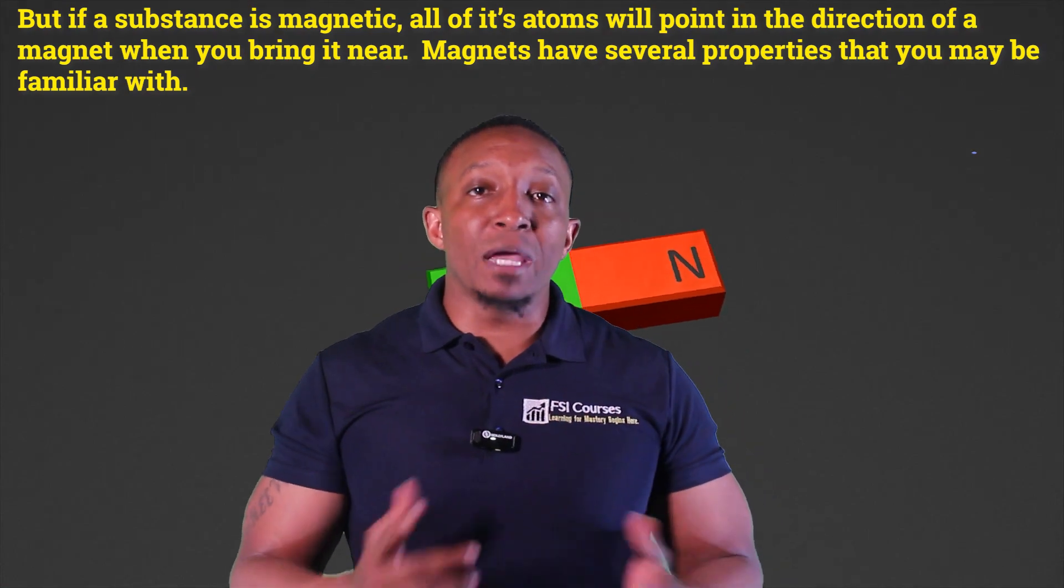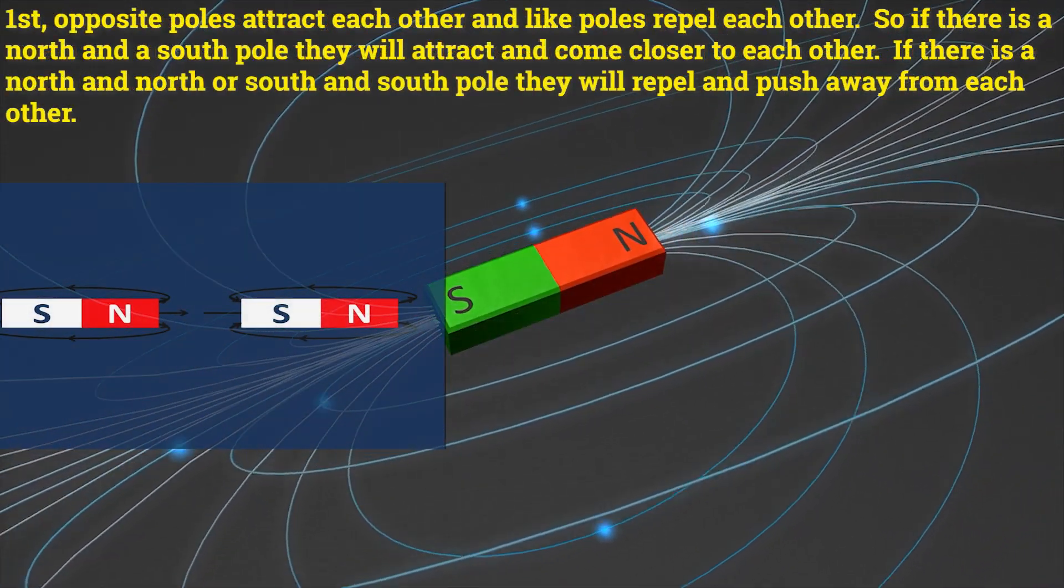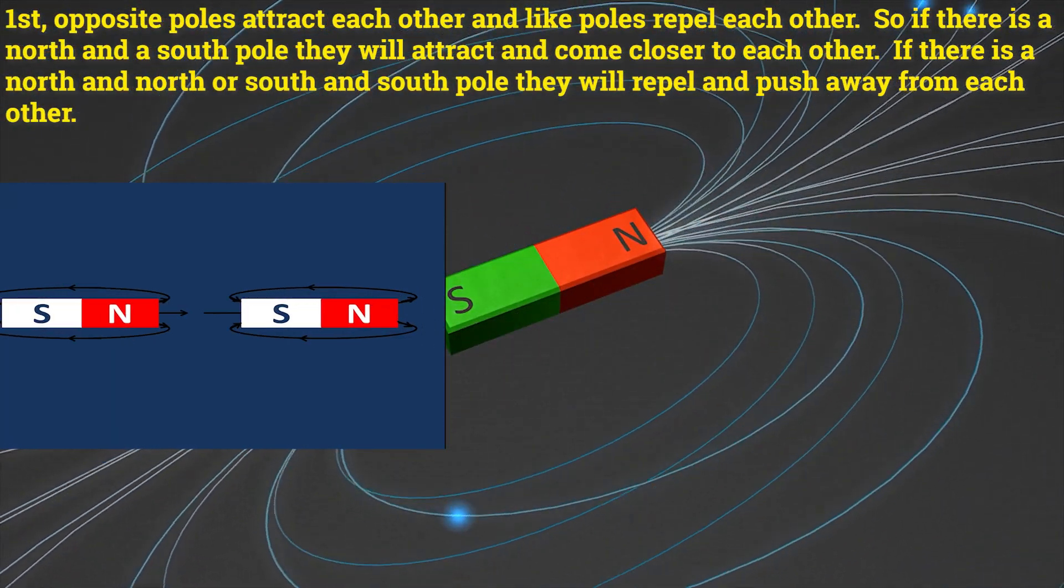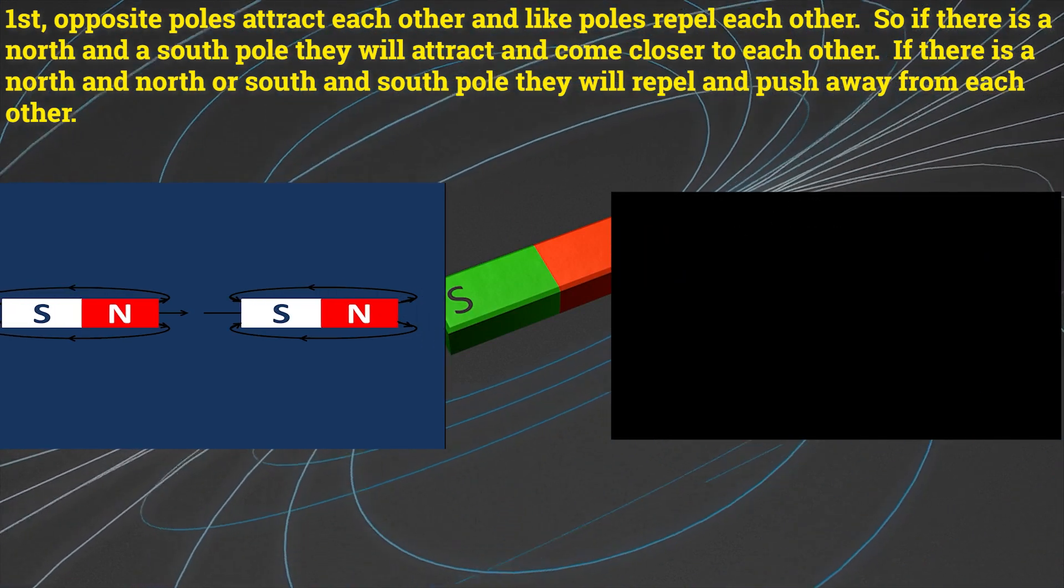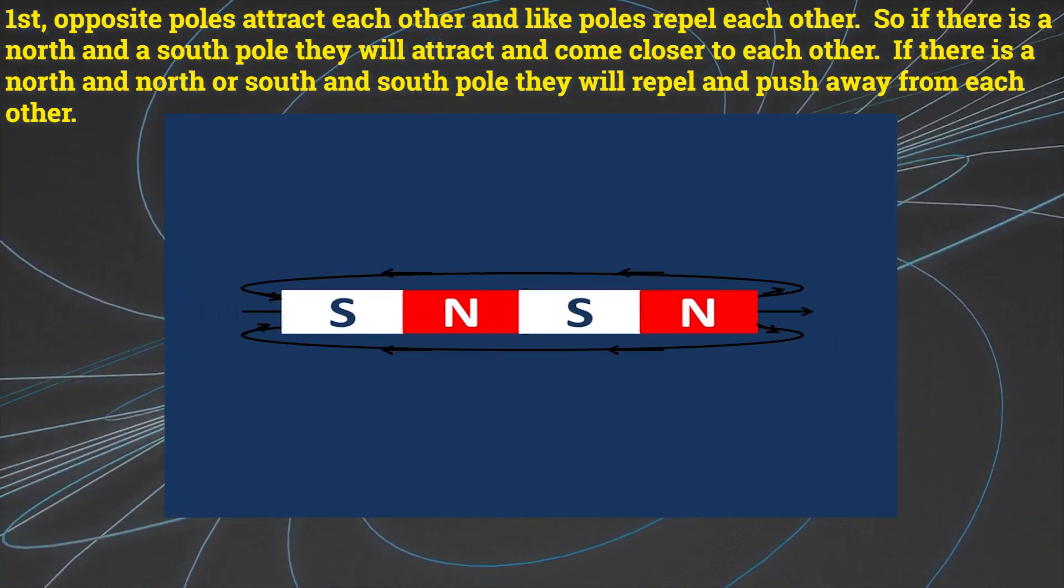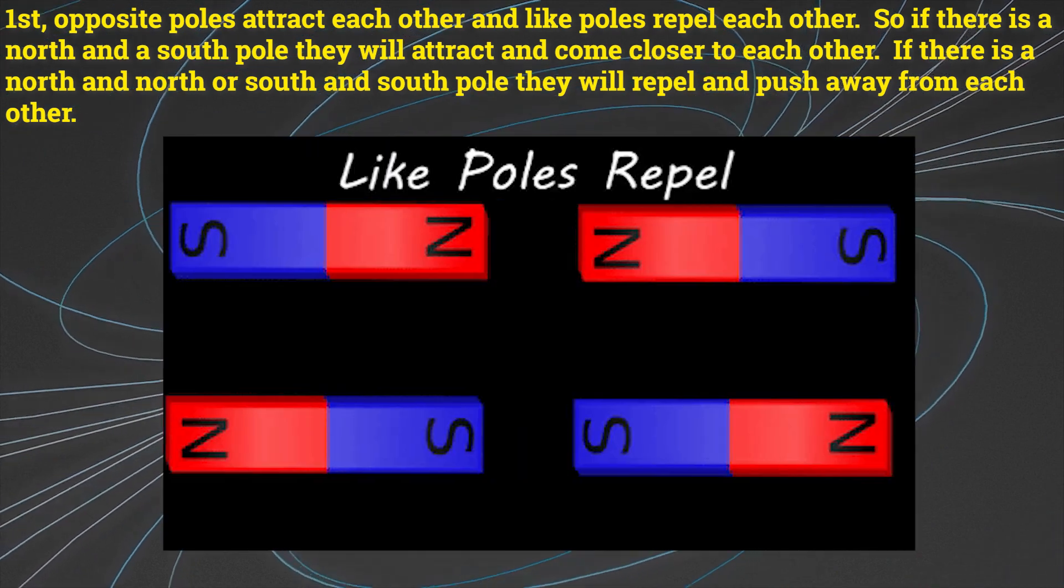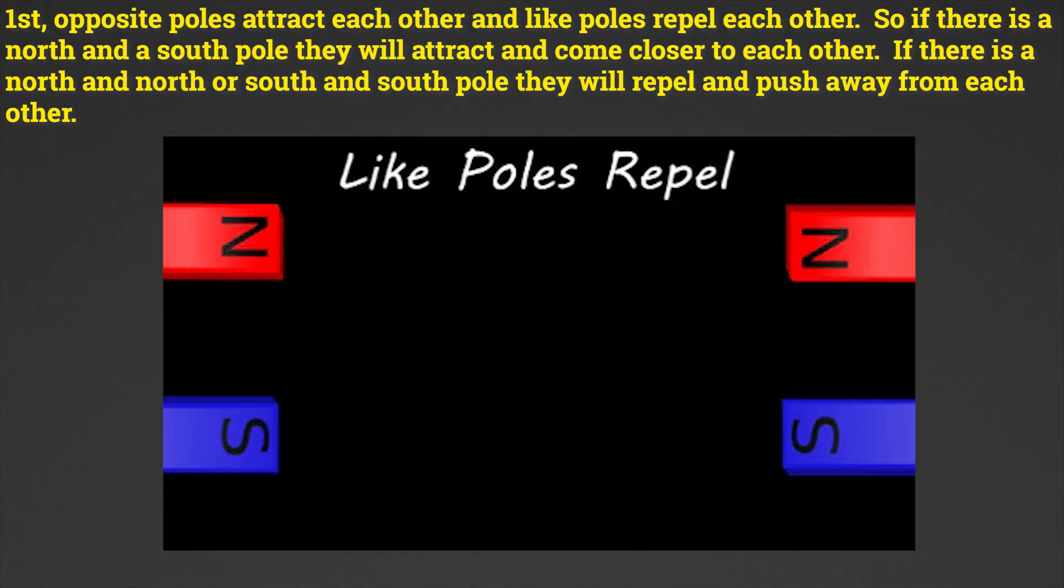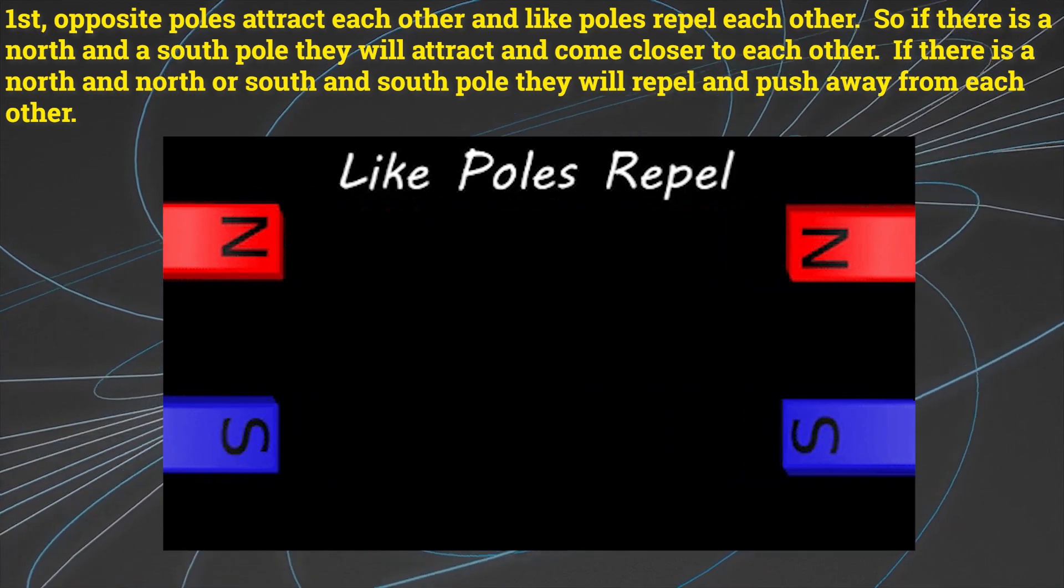Magnets have several properties that you may be familiar with. First, opposite poles attract each other and like poles repel each other. So if there is a north and a south pole they will attract and come closer to each other. If there is a north and north or south and south pole they will repel and push away from each other.